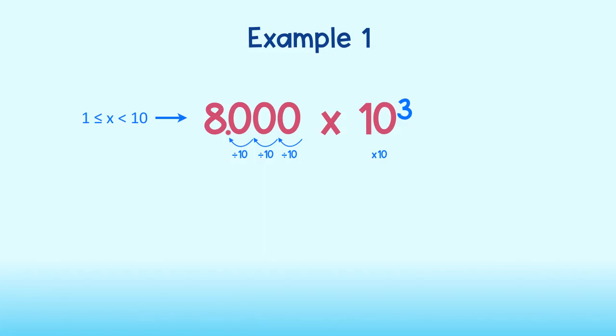Okay, great. Now I have the decimal 8.0, which is where I stop since it is greater than or equal to 1 and less than 10. This leaves me with 10 to the third power.